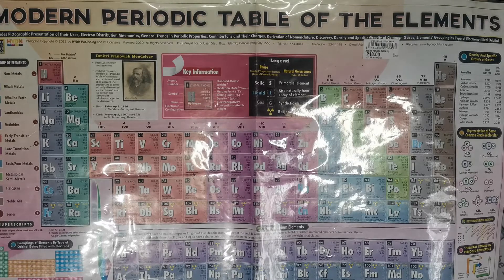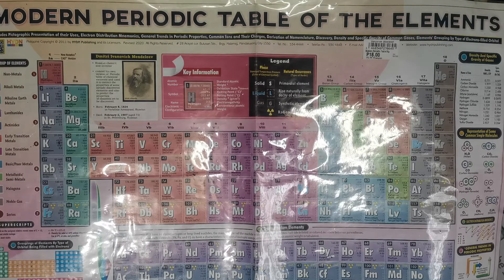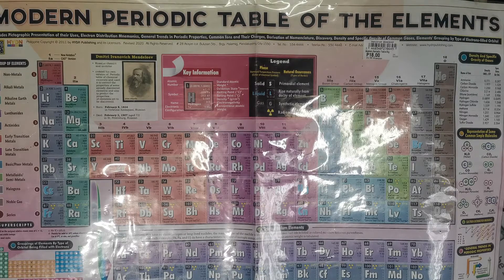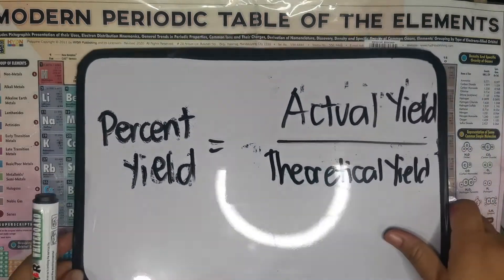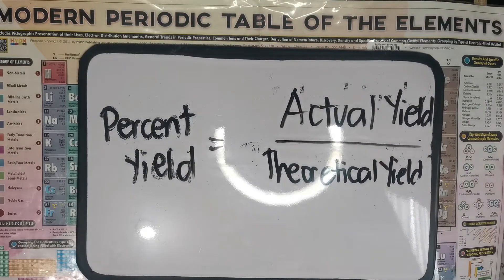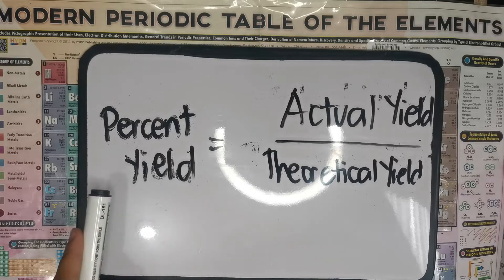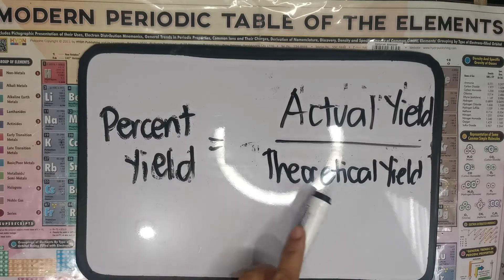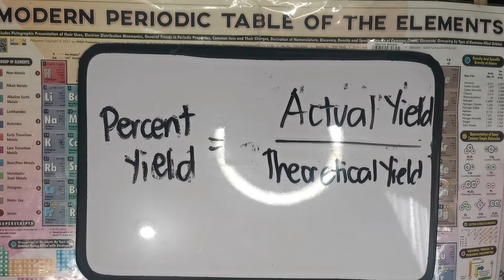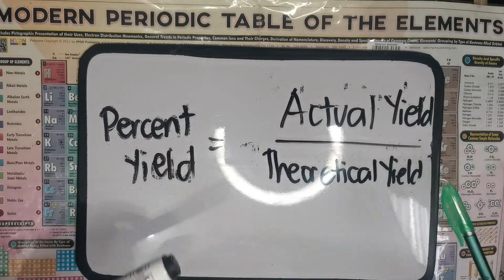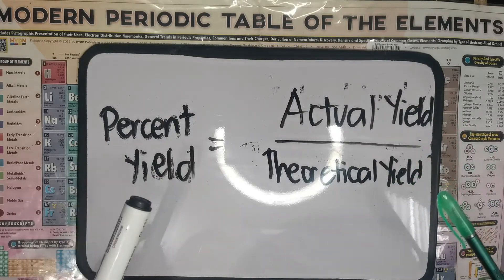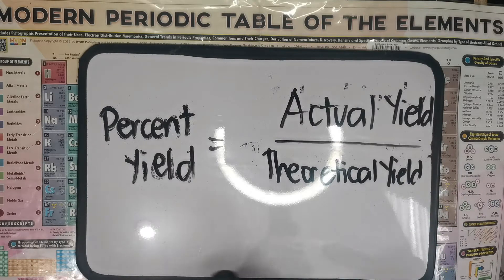Today, for this video, we're going to have the percent yield, theoretical yield, and actual yield. Before that, let us have the formula on how to compute percent yield. So, percent yield is equal to actual yield divided by theoretical yield. But before we go to our tutorial of computation, let us analyze first what is the purpose or the importance of percent yield.